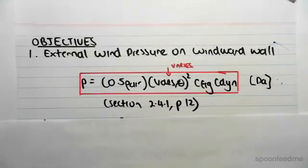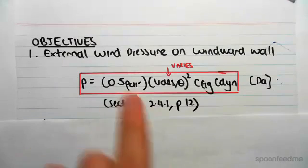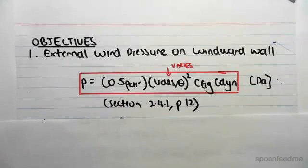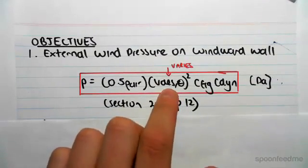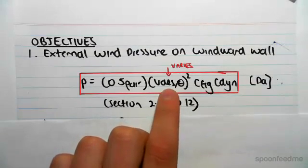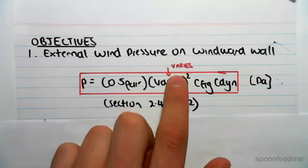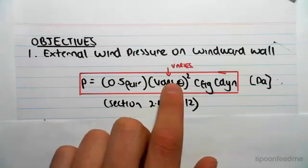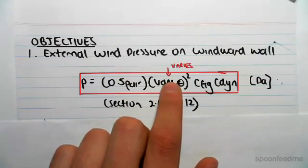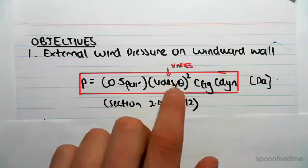We have done this in the previous example — we found the external wind pressure — except now the design wind speed for the windward wall is actually going to be varying with height. So the pressure is going to be varying with height, which we did not see in the previous example. We're going to be using Excel once again in the next video to help us out.